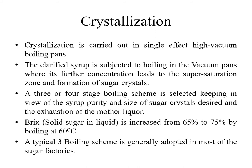After evaporation, the next step is crystallization. Crystallization is the formation of sugar crystals from thick cane syrup. Crystallization is carried out in single-effect high-vacuum boiling pans. The clarified syrup is subjected to boiling in vacuum pans where further concentration leads to the supersaturation zone and the formation of sugar crystals. A three or four-stage boiling scheme is selected, keeping in view the syrup purity, the desired size of sugar crystals, and the exhaustion of the mother liquor.